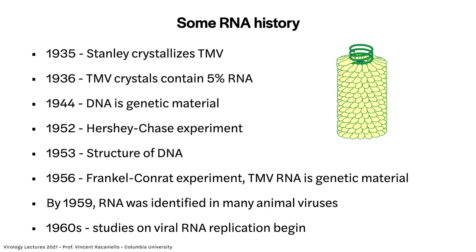In 1935, tobacco mosaic virus — remember the first virus discovered in the end of the 1800s — a scientist named Stanley crystallized it. The crystals are made of protein and have 5% RNA in them. In 1936, Stanley said it was a contaminant, irrelevant. He thought the protein was infectious, which we now know happens for other things called prions. But this was a virus, and the RNA was what carried infectivity.